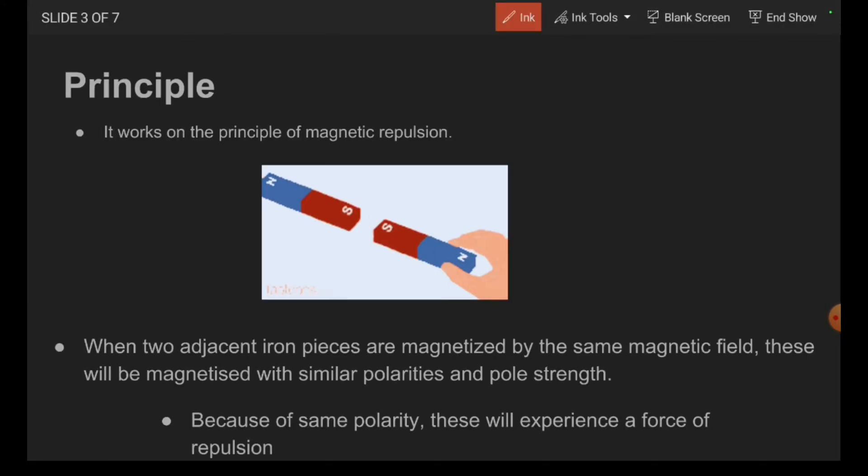Regarding the principle, it works on the principle of magnetic repulsion. At first we are considering two soft iron pieces. This is one iron piece and this one is second iron piece.